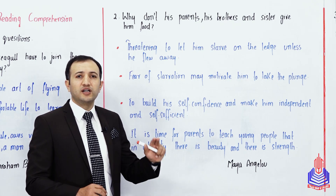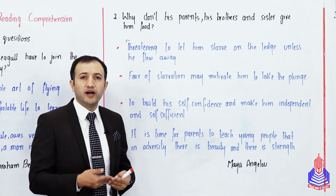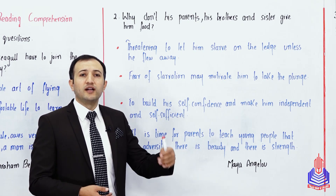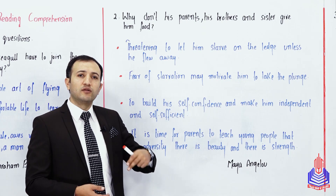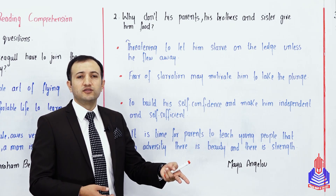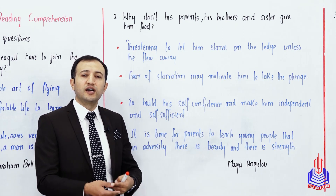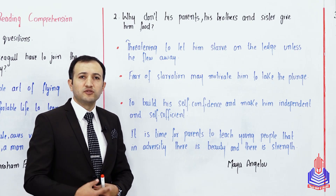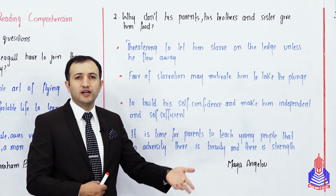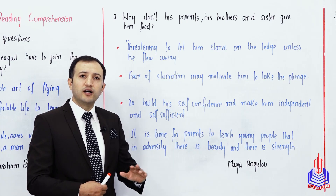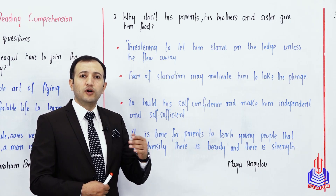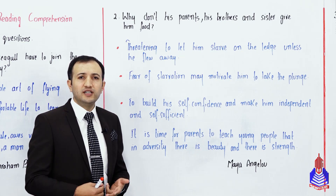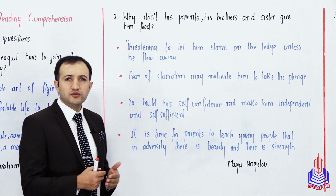Making him self-sufficient and independent is compulsory because parents will make another nest, hatch new eggs, and carry on the natural process of advancing their race. They cannot keep feeding their children forever.